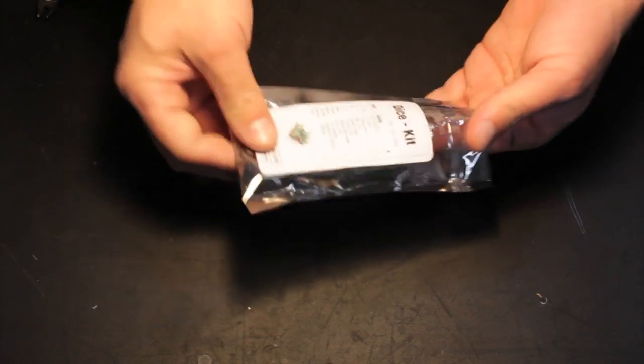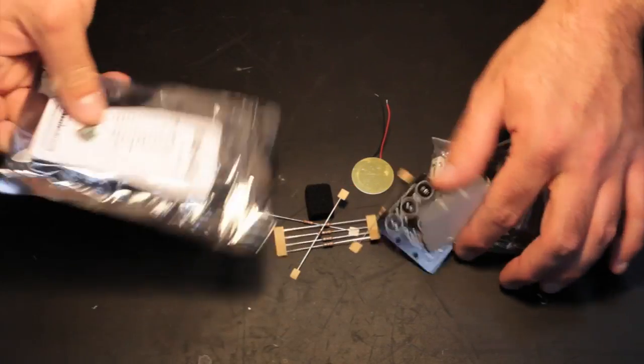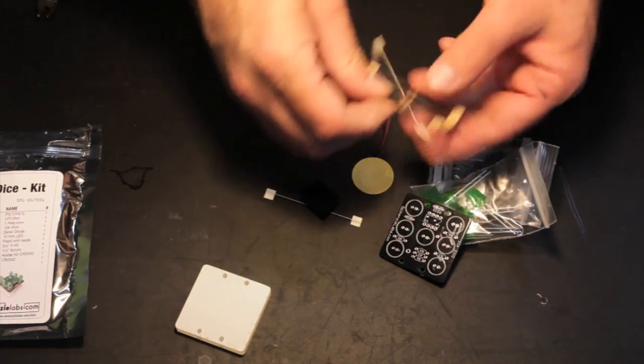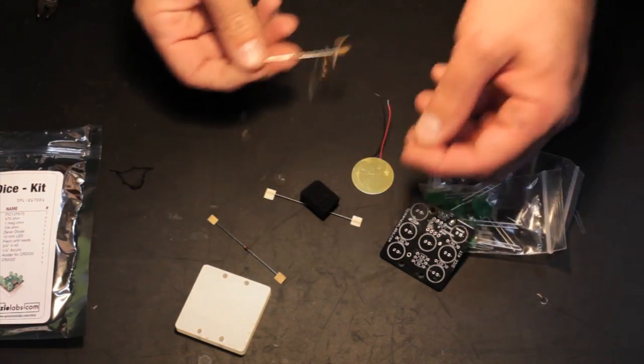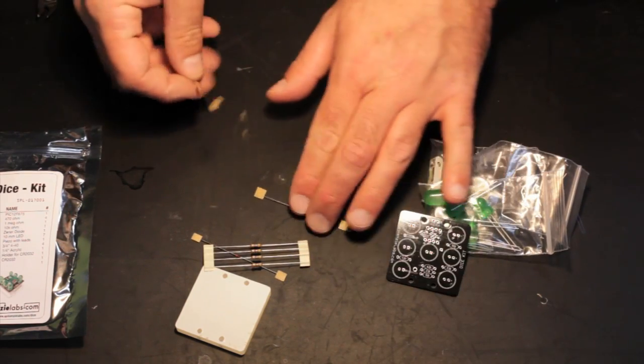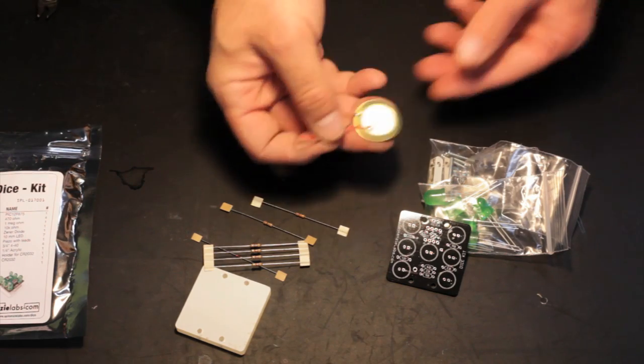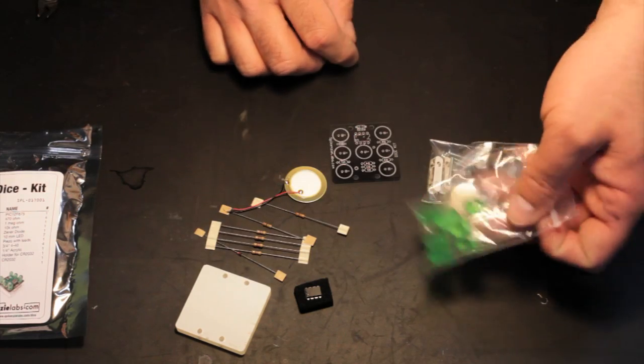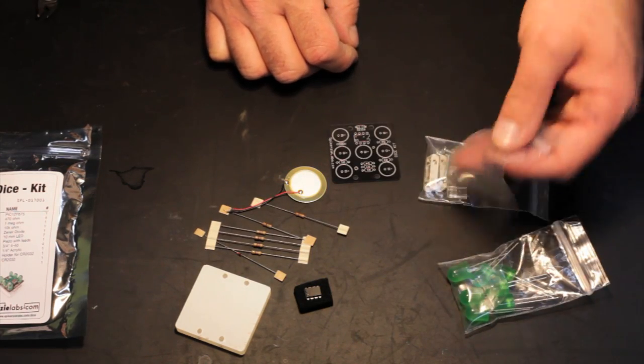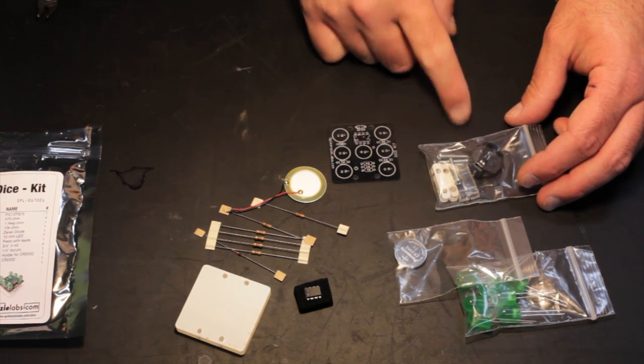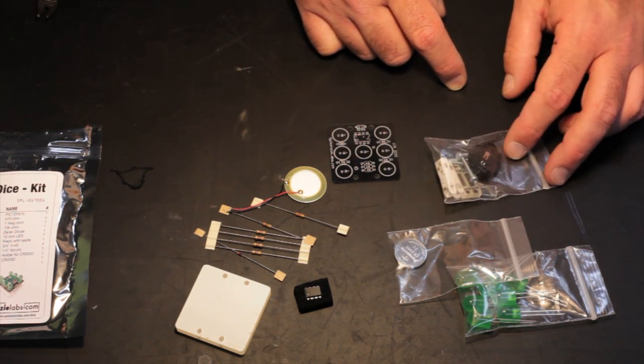The first thing that you do is dump everything out. The acrylic base that's been tapped, a single diode, four 470 ohm resistors, a 10K and one mega ohm resistor, a Piezo with leads, a tiny PIC microprocessor, the PCB, a bag of seven LEDs, CR2032 battery, and then another bag with some acrylic pieces, four screws and the battery holder.